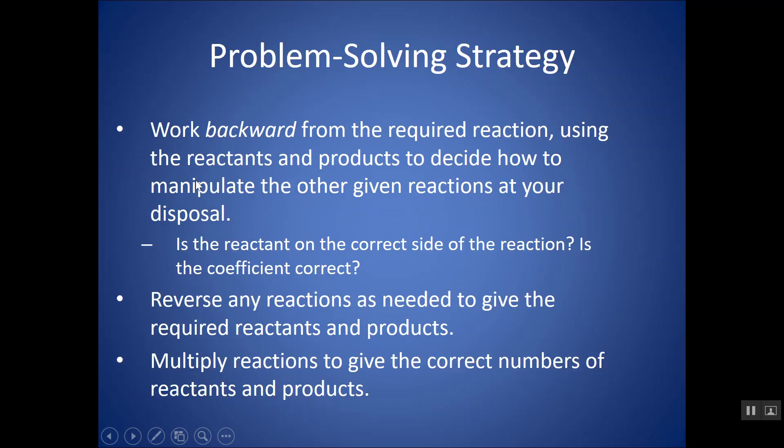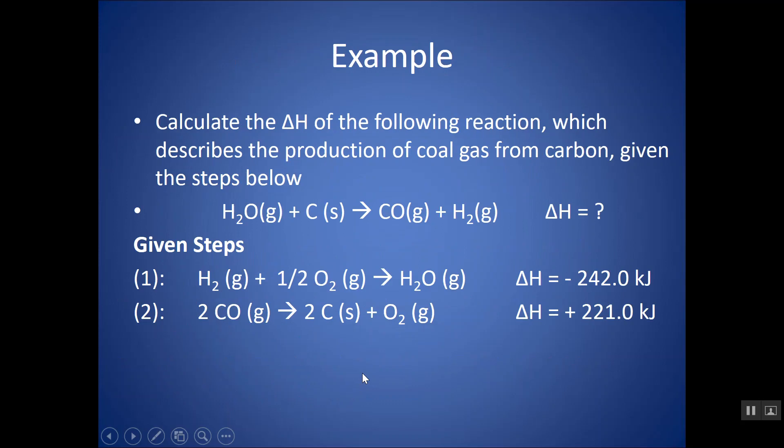So, problem solving strategy. Work backward from the required reaction. Go through each reactant and product. Find it in the step and ask yourself, is it on the correct side? Is the coefficient correct? And, make sure if you reverse any reactions, you're flipping the sign of delta H. If you're multiplying by anything, you're multiplying the whole reaction and the delta H by that same factor. Take a moment, try this example. Pause your video and then check your work.